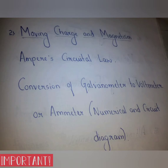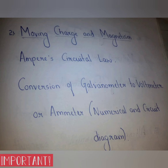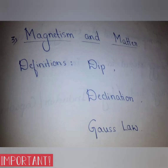From Chapter 2, Moving Charges and Magnetism, the most important and repeated questions are Ampere's Circuital Law, conversion of galvanometer to voltmeter or ammeter including numericals and circuit diagrams. From Chapter 3, Magnetism and Matter, mostly definitions are asked, like what is dip, declination, and Gauss's law.